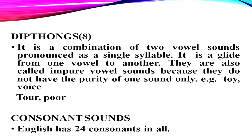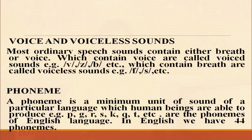Now consonant sounds. The English system has 24 consonants in all. Now let's talk about voiced and voiceless sounds. Most ordinary speech sounds contain either breath or voice. Those which contain voice are called voiced sounds — for example V, Z, B, etc. Those which contain breath are called voiceless sounds — for example F, S, etc.